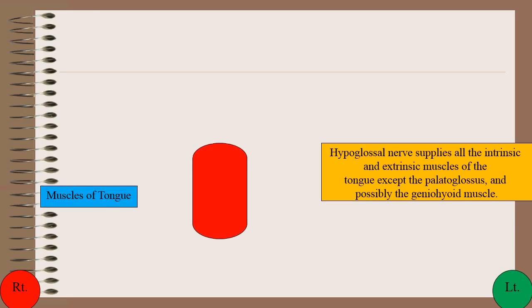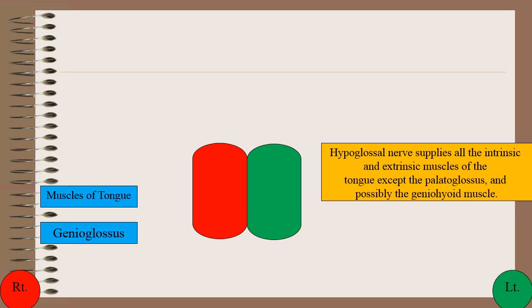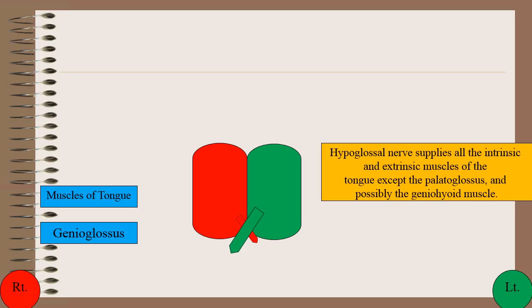This red symbol indicates all intrinsic and extrinsic muscles on the right side of the tongue, and this green one indicates all the intrinsic and extrinsic muscles on the left side. The red symbol indicates the right-sided genioglossus, which after contraction causes deviation of the tongue to the left side, and the green symbol indicates the left-sided genioglossus, which after contraction causes deviation of the tongue to the right side.